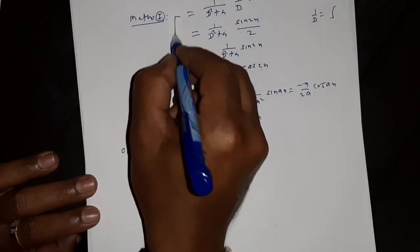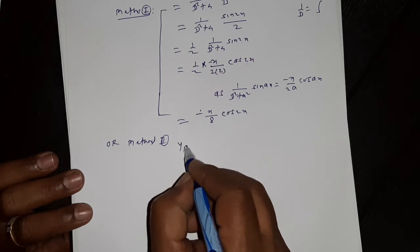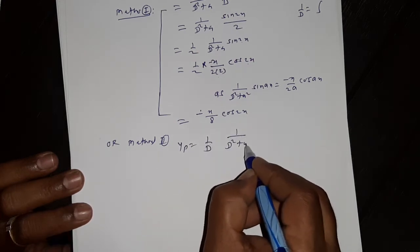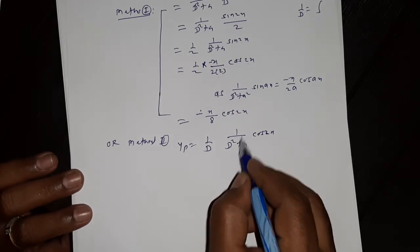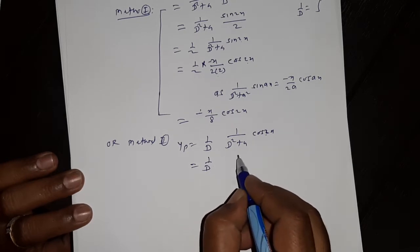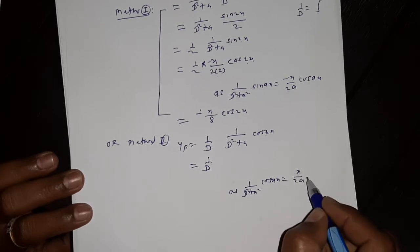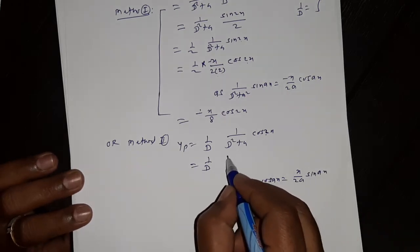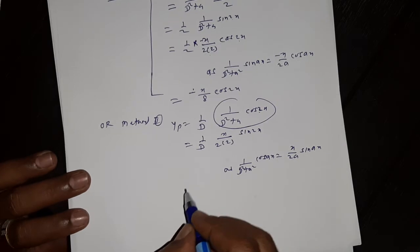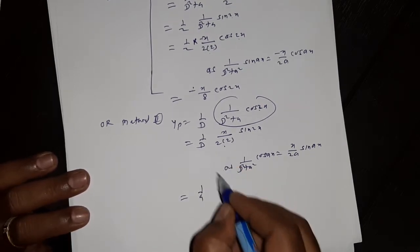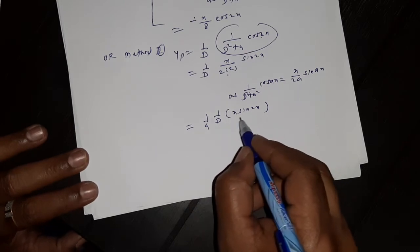From the same step, applying Method 2: y_p = 1/D · [1/(D² + 4) · cos(2x)]. First apply the rule 1/(D² + a²) · cos(ax) = x/(2a) · sin(ax), so 1/(D² + 4) · cos(2x) = x/4 · sin(2x). Then we have 1/D · (1/4) · x · sin(2x), where 1/4 is constant and 1/D means integration of x·sin(2x).